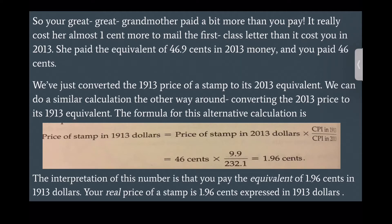We have just converted the 1913 price of a stamp to its 2013 equivalent. We can do a similar calculation the other way around, converting the 2013 price to its 1913 equivalent. The formula is: price of stamp in 1913 dollars equals price of stamp in 2013 dollars times CPI in 1913 over CPI in 2013, equals 46 cents times 9.9 over 232.1, equals 1.96 cents. The interpretation is that you pay the equivalent of 1.96 cents in 1913 dollars. Your real price of a stamp is 1.96 cents expressed in 1913 dollars.